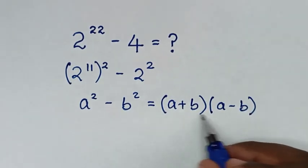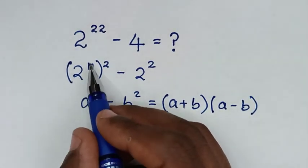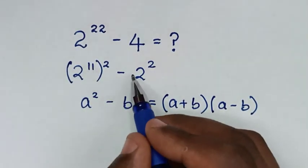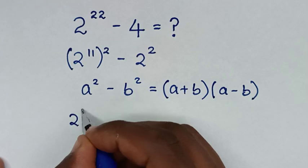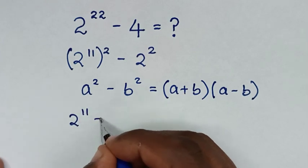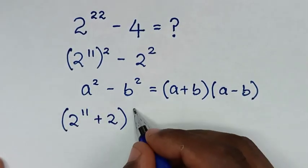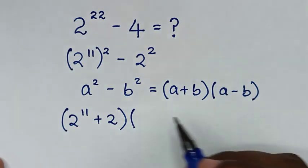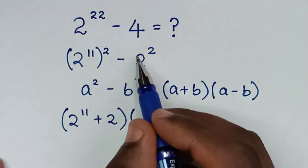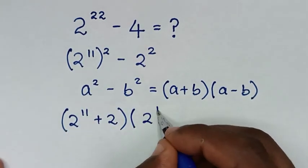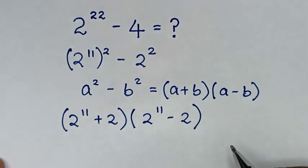Then we'll apply this form: a plus b will be 2 power of 11 plus 2, and a minus b will be 2 power of 11 minus 2. So we get (2 power of 11 plus 2) times (2 power of 11 minus 2).